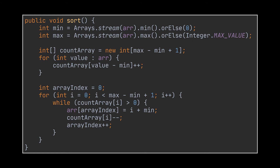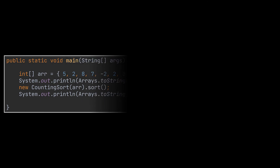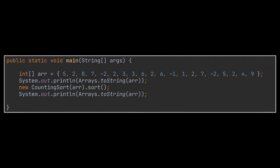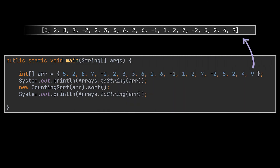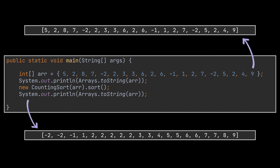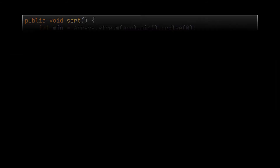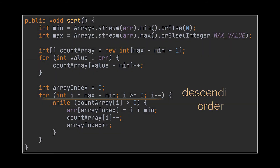And there you have it — the counting sort algorithm. Let's create a main method and test what we just implemented. I went ahead and created an array of integers, printed out the initial state, then called the sort method. As you can see, the array is now sorted in ascending order. If you want to sort in descending order, all you have to do is reverse the direction of the second for loop — the one iterating over the array storing the number of occurrences.